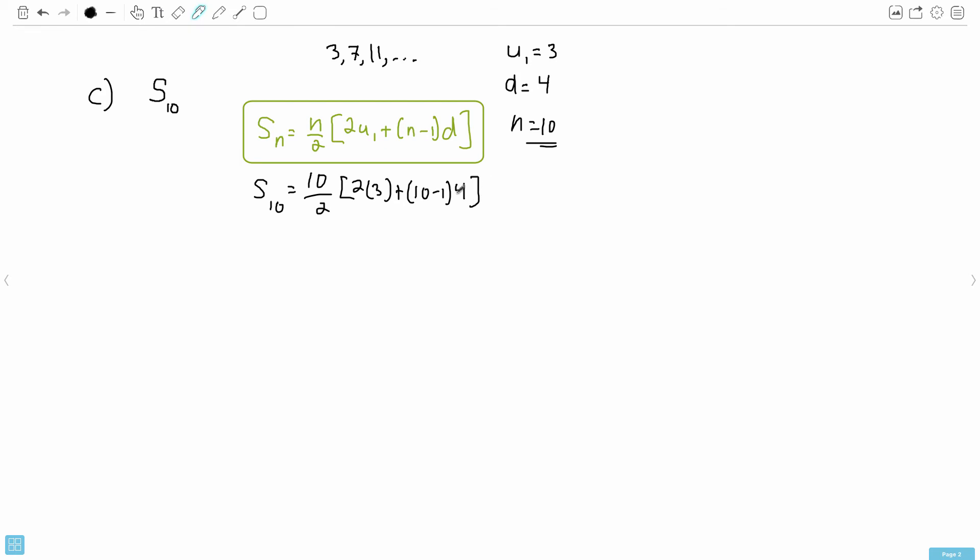I'm showing you every step. You know some people like to skip steps, that's perfectly fine. 10 over 2 is 5. Let's do this open bracket here. 2 times 3 is 6, plus 10 minus 1, that's 9 times 4.